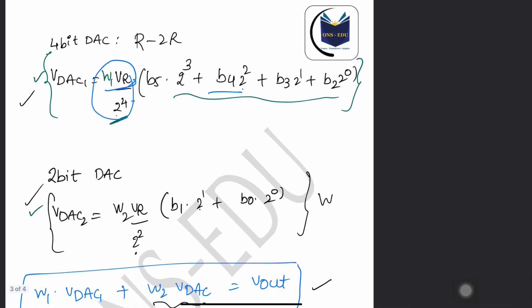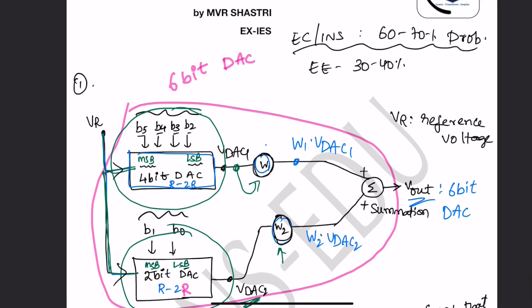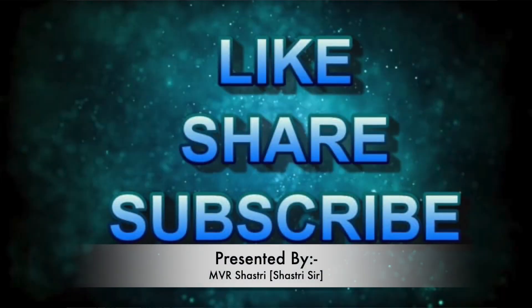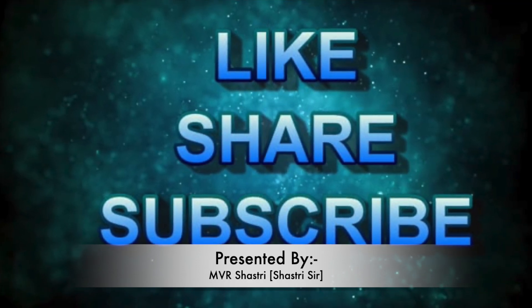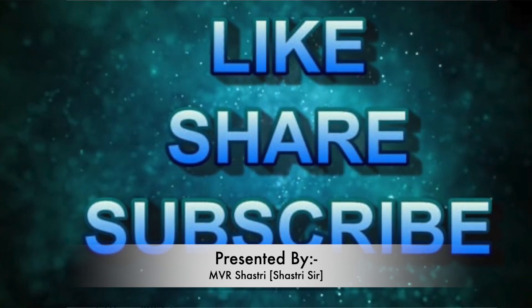This is a good two-mark question. You can expect it for EC and Instrumentation — around 60-70% probability. For Electrical, the probability is around 30-40%. DAC model questions are generally asked more in Instrumentation and EC. Okay friends, thank you. Please subscribe to my channel ONS-EDU. I will be regularly updating good questions which will be helpful for you. Thanks — I am Shastri, bye.